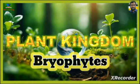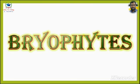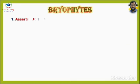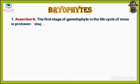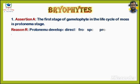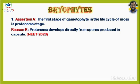Plant Kingdom — Bryophytes. Question No. 1. Assertion: The first stage of gametophyte in the life cycle of Moss is the Protonema stage. Reason: Protonema develops directly from spores produced in the capsule. Asked in NEET 2023.